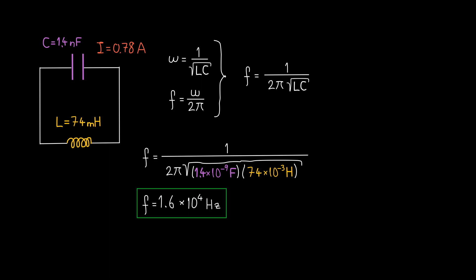Here is the numerical result. The oscillation frequency of this circuit is equal to 1.6 times 10 to the 4th hertz. What does it mean? It means that the circuit completes 16,000 oscillations in a given second.